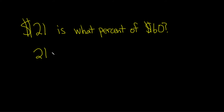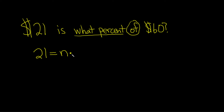"Is" means equals. "What percent?" — that's what we're looking for. I'm going to call that lowercase n. You can use any variable you want; I just wanted to use n. "Of" means multiply, so you can put an x here or a dot — I'm going to go with the dot. And then we have the 60. So "what percent of 60" is n times 60.